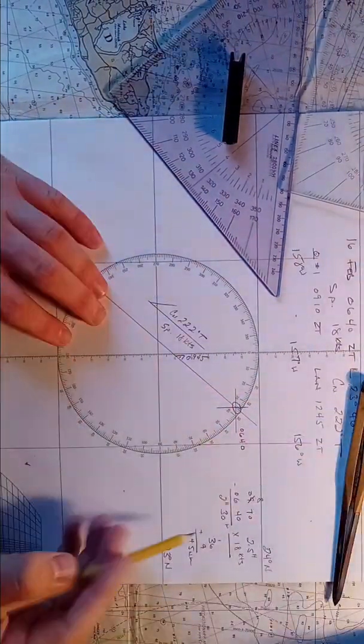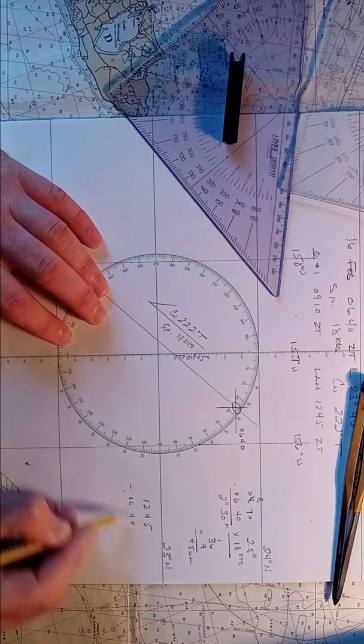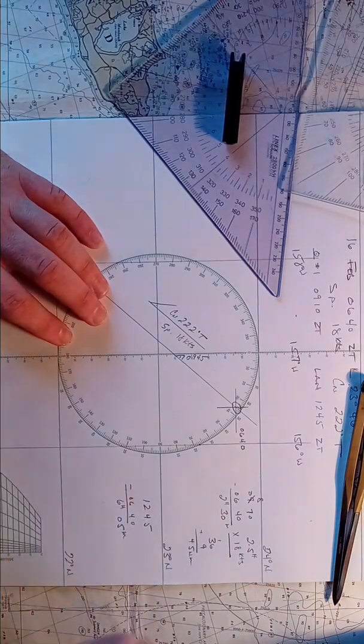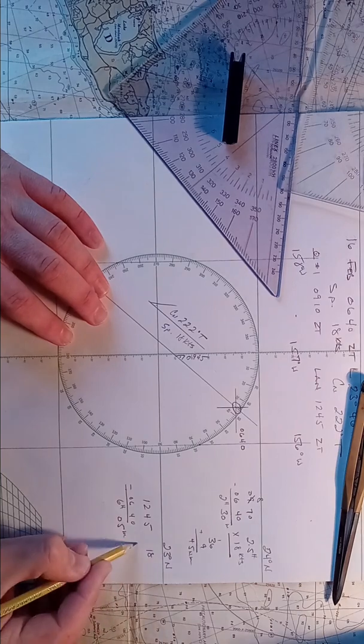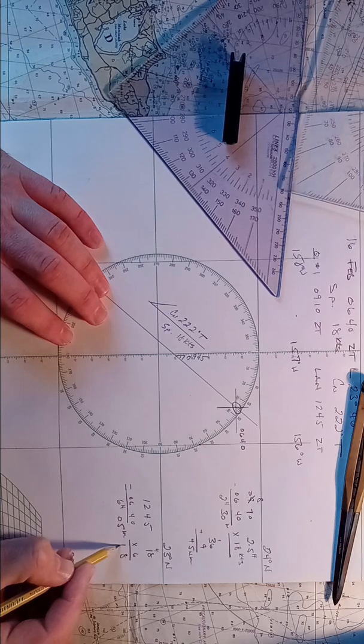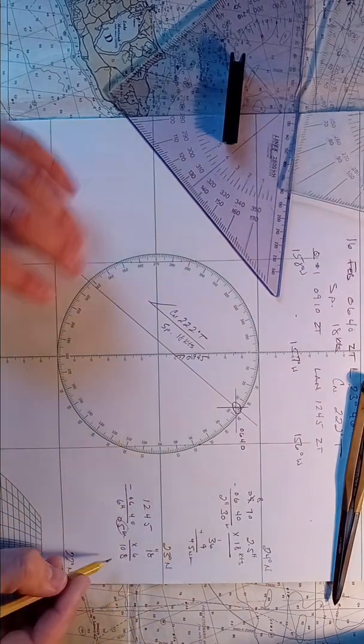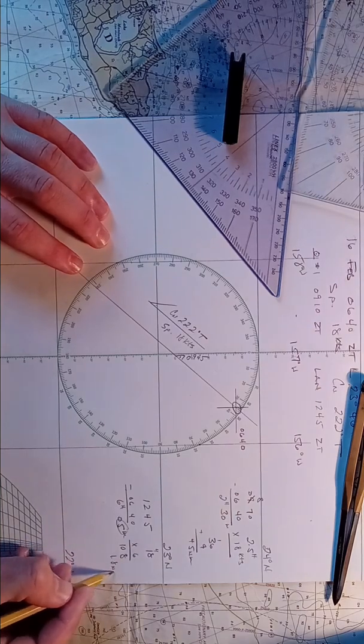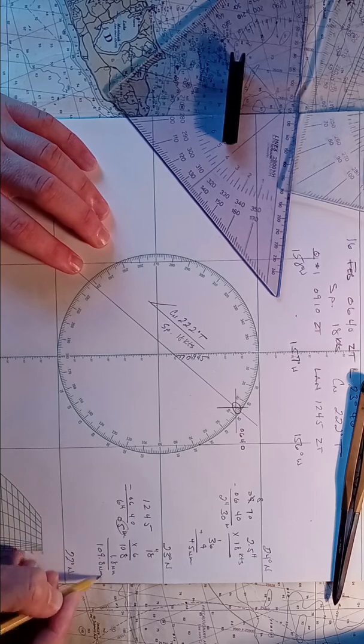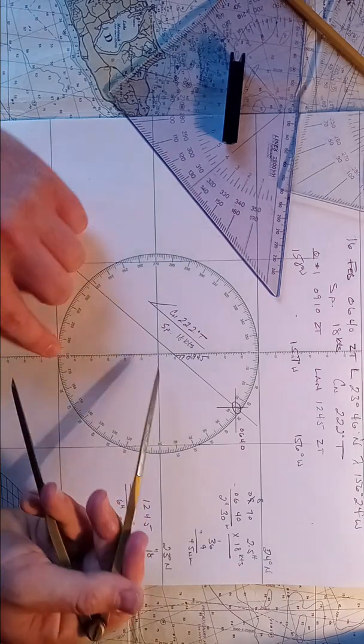Now 1245 minus 0640. 6 hours and 5 minutes. 18 times 6, 6 and 8 is 48, carry the 4, 108. That's roughly 6 minutes. So we're going to add an additional 1.8 nautical miles to that. So that's 109.8 nautical miles. 60, from here to here is 60.